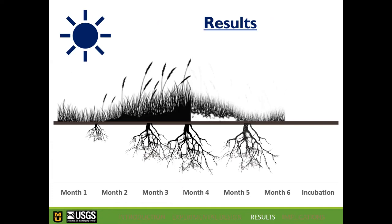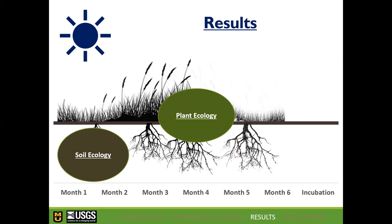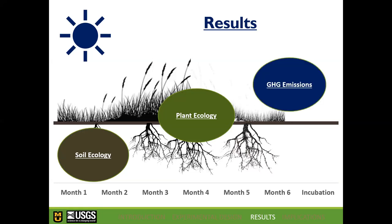For results, I'll present three categories. First, soil ecology — we looked at soil carbon, nitrogen, and phosphorus, the biogeochemical cycles, and soil microbial populations to track these cycles and see if they differed among precipitation treatments. Next, plant ecology — specifically the germination study, looking at how temperature and precipitation impacted germination and early season plant growth. Finally, results from the greenhouse gas emissions incubation study.